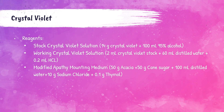The reagents for the crystal violet stain are: a stock crystal violet solution prepared by combining 14 grams of crystal violet with 100 milliliters of 95% alcohol; a working crystal violet solution prepared by combining 2 milliliters of stock solution, 60 milliliters of distilled water, and 0.2 milliliters of hydrochloric acid; and modified Apathy mounting medium, created by combining 50 grams of acacia, 50 grams of cane sugar, 100 milliliters of distilled water, 10 grams of sodium chloride, and 0.1 grams of thymol.